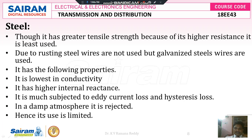Steel is much subjected to eddy current loss and hysteresis loss. Eddy currents are unwanted circulating currents in the conductor rather than currents moving from one end to another. Hysteresis loss exists due to the alternating current frequencies in the steel core. These two losses are called core losses because of the steel core. Steel is also not preferred in a damp atmosphere — where the climate changes between rainy, windy, and hot conditions — because in such conditions additional losses occur, which is why its use is limited to small proportions in any alloy mixture.